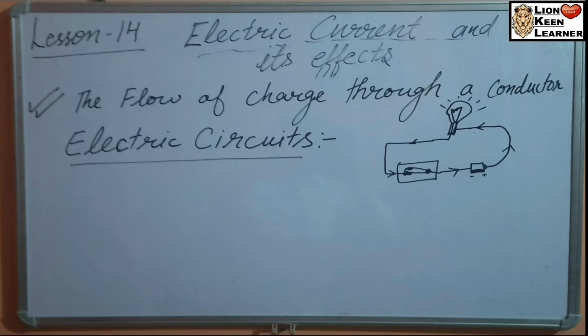In figure we have a cell having a positive terminal and negative terminal. The positive terminal of the cell is connected to one end of the switch with a piece of copper wire. The other end of the switch is connected to one end of the bulb holder with another piece of copper wire. The negative terminal of the cell is connected directly to the other end of the bulb holder with a copper wire.